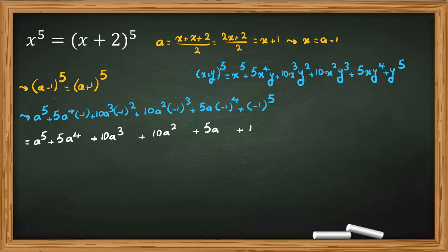Now we cancel common terms. If we cancel common terms, a to the 5, a to the 5 will be canceled. This one, this one will be canceled, and this one, this one will be canceled. So if we take all things to right-hand side, 0 equal to 10 a to the 4 plus 20 a squared plus 2.